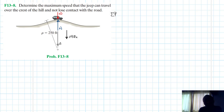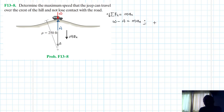Let's apply the equations of motion. The summation of forces in the n-axis, taking downward as our reference, equals m times a_n. Therefore we have W minus N equal to m times a_n, where a_n, the normal centripetal acceleration, is equal to v² divided by ρ, and ρ is given as 250 feet.